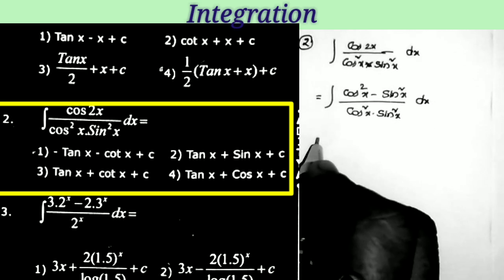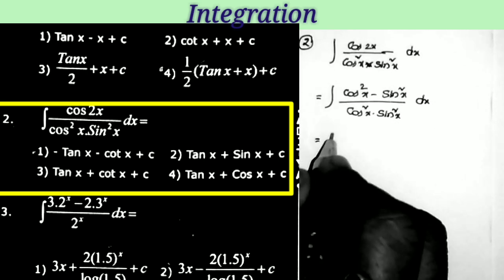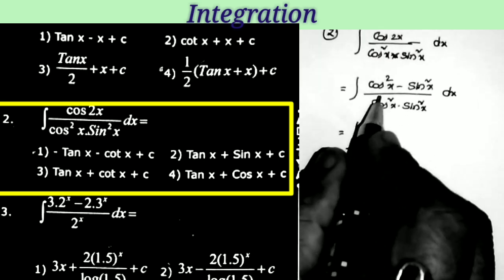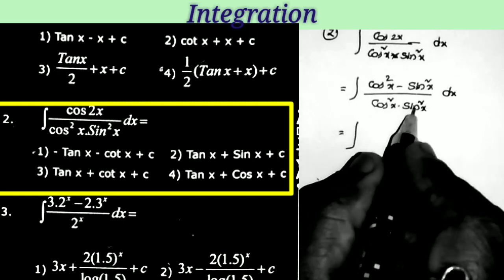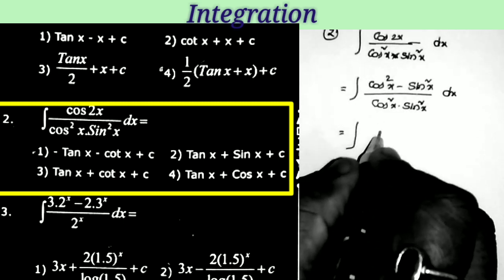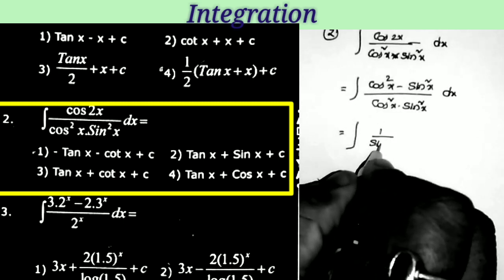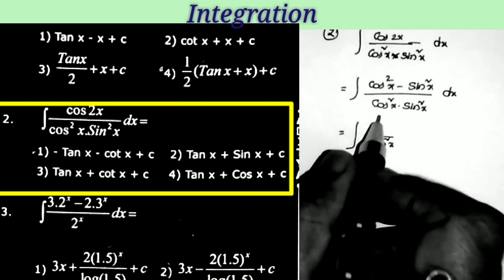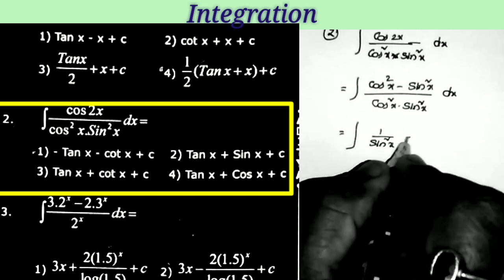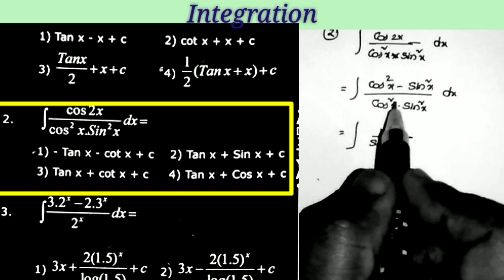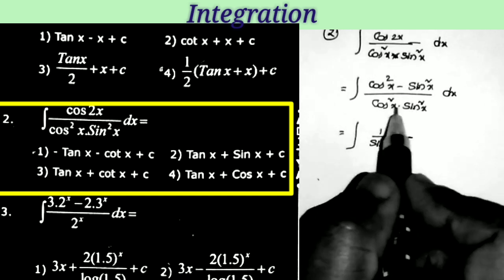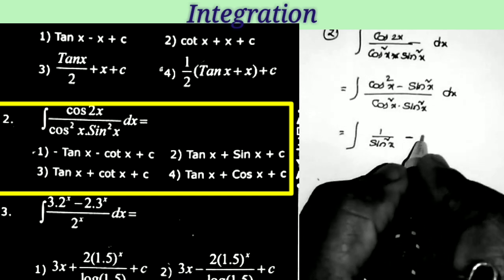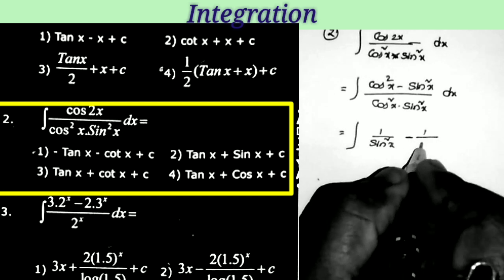This equals integral — now separating the denominator: cos²x / (cos²x · sin²x) gives 1/sin²x. Here cos²x and cos²x get cancelled. Minus sin²x / (cos²x · sin²x) — these two sin²x terms cancel, leaving 1/cos²x.